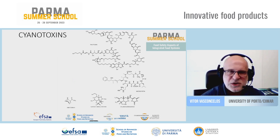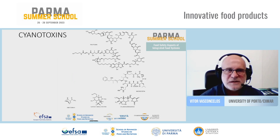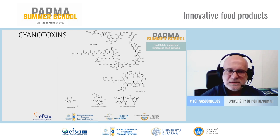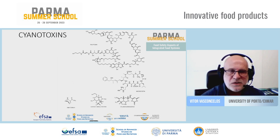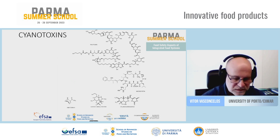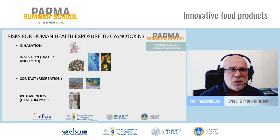There is a huge variety of toxins — we now know hundreds that can be produced by cyanobacteria. These range from very large molecules like palytoxin, produced also by some dinoflagellates and common in recreational areas in the Mediterranean, to very small molecules like anatoxin-a, which is an alkaloid with strong neurotoxicity that can kill a mouse in less than two minutes.